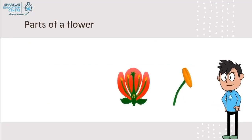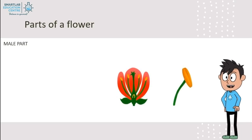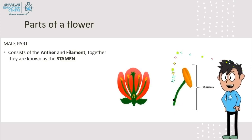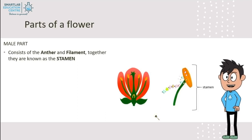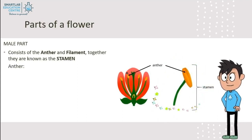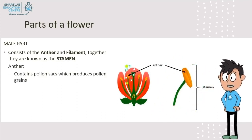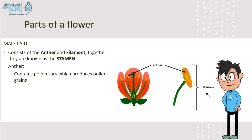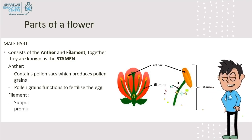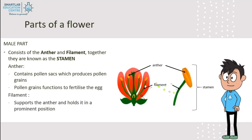Parts of a flower. Let's look at the male parts of a flower. It consists of the anther and filament, together they are known as the stamen. The anther contains pollen sacs, which produce pollen grains. Pollen grains function to fertilize the egg. The filament supports the anther and holds it in a prominent position.